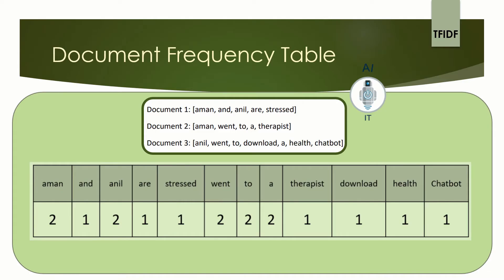In these three documents, you are going to check in how many documents the word AMAN appears. You see it in the first document and the second document, so you take the number as 2. AND appears only in the first document, hence the document frequency is 1. ANIL appears in the first and third document, so the document frequency is 2. ARE appears only in the first document, value is 1. And so is for STRESSED. You start marking the number of documents in which a word occurs. You are not counting the number of times a word occurs — even if AMAN occurs twice in a document, you take the count as 1.